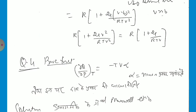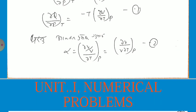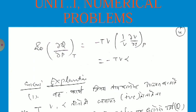Next question, number 5: prove that del Q by del P at constant temperature is equal to minus TVα, where α is the coefficient of thermal expansion. Using the Maxwell relation, del S by del P at constant temperature equals minus del V by del T at constant pressure. So, since T dS equals dQ, we get del Q by del P at constant temperature equals minus T times del V by del T at constant pressure. And since alpha equals (1/V)(del V / del T) at constant pressure, substituting gives del Q by del P at constant temperature equals minus TVα.